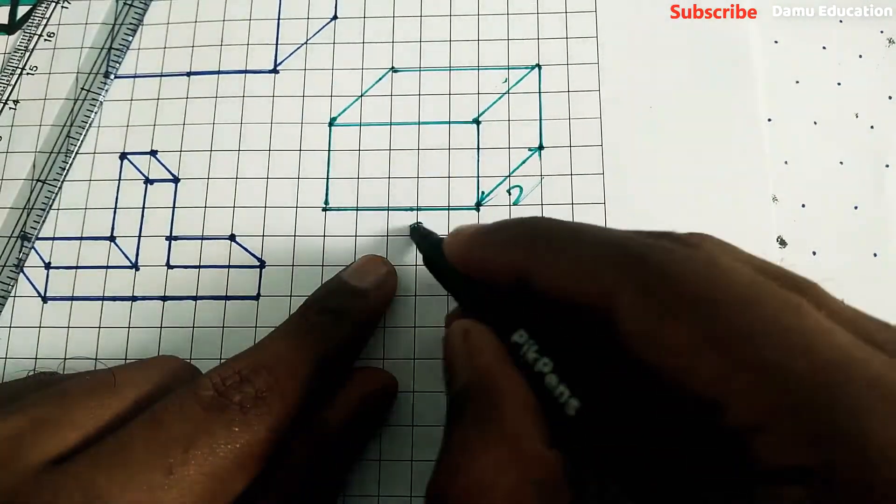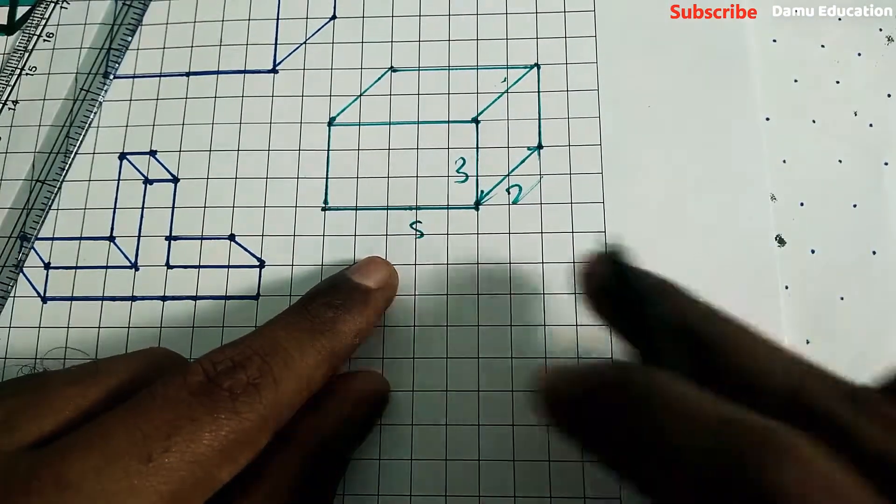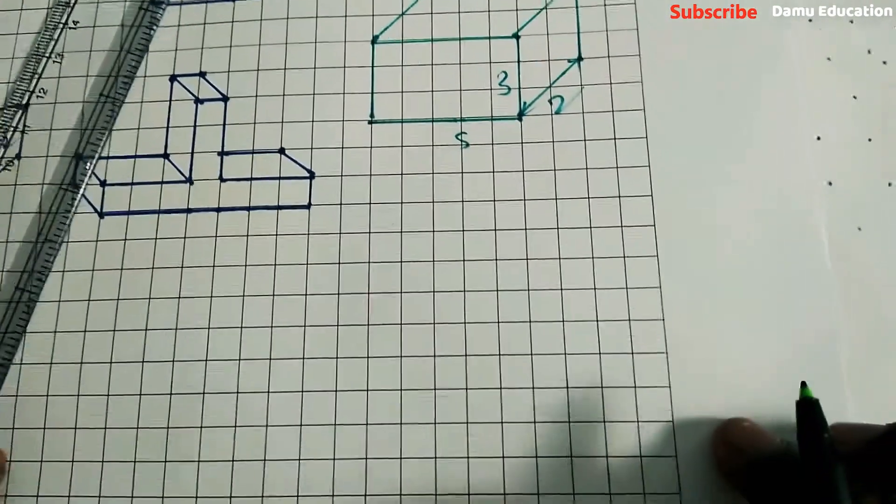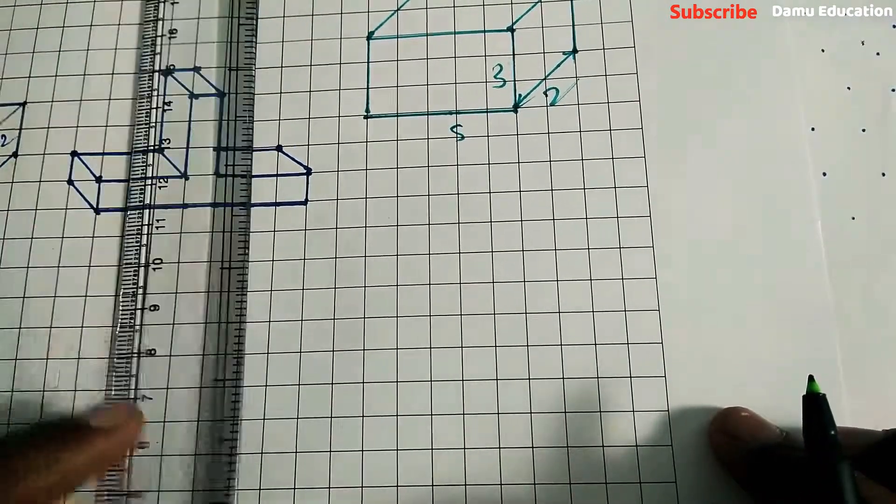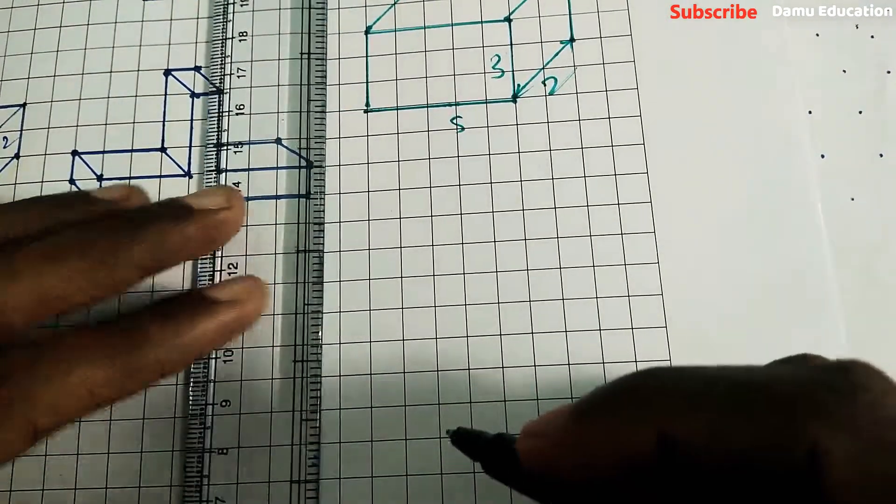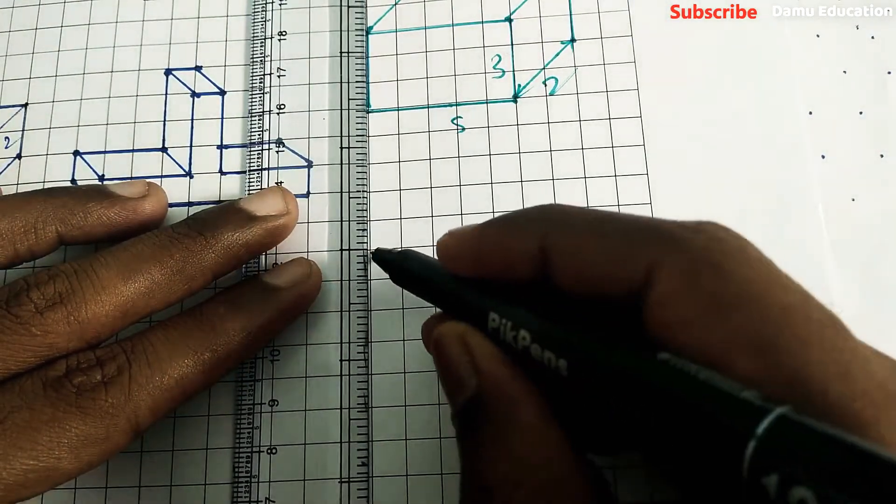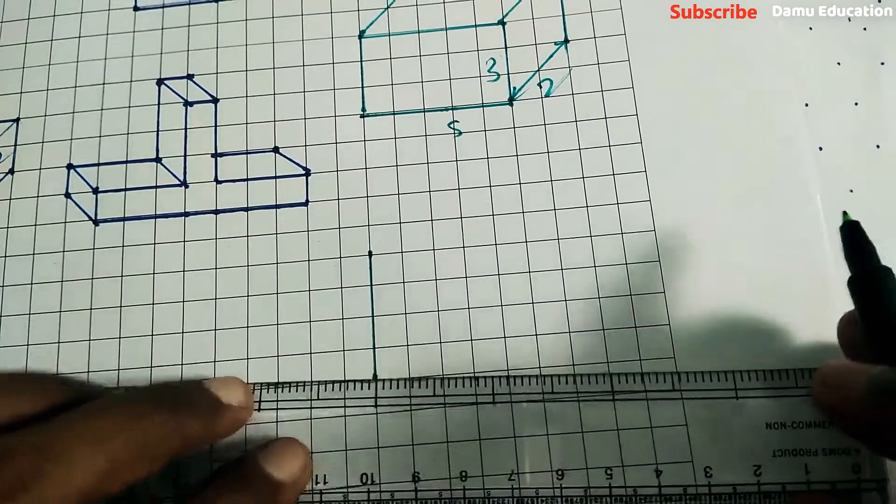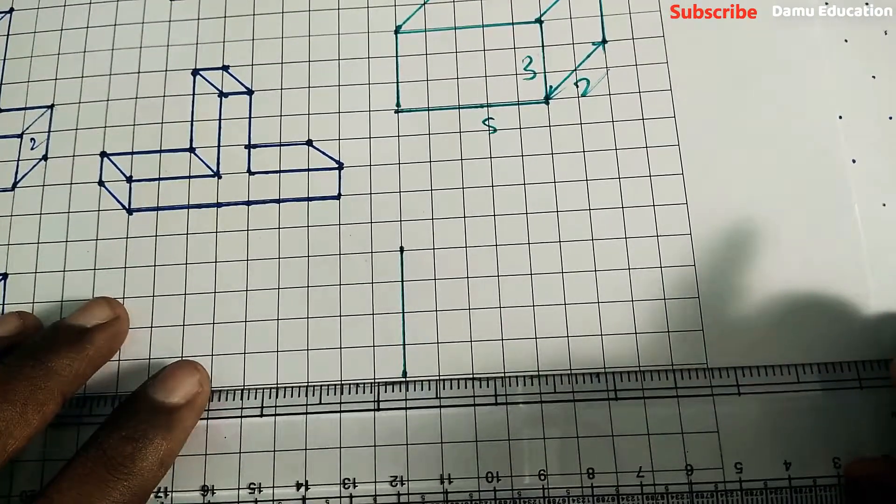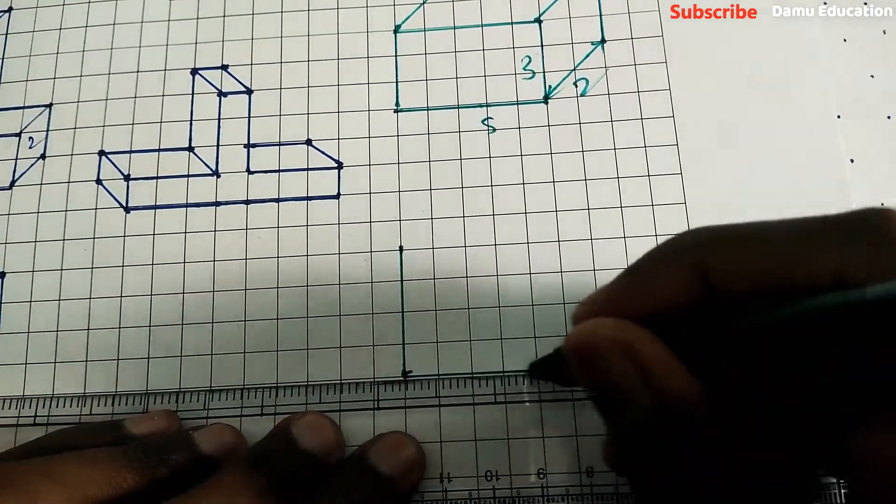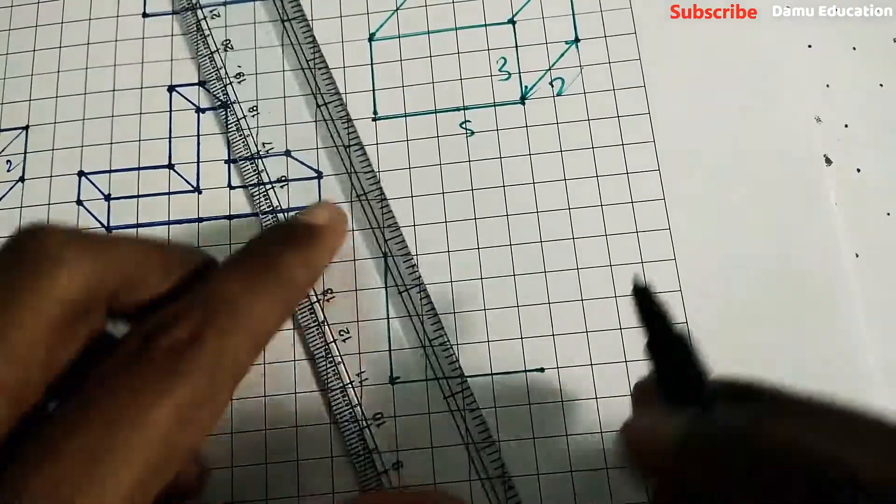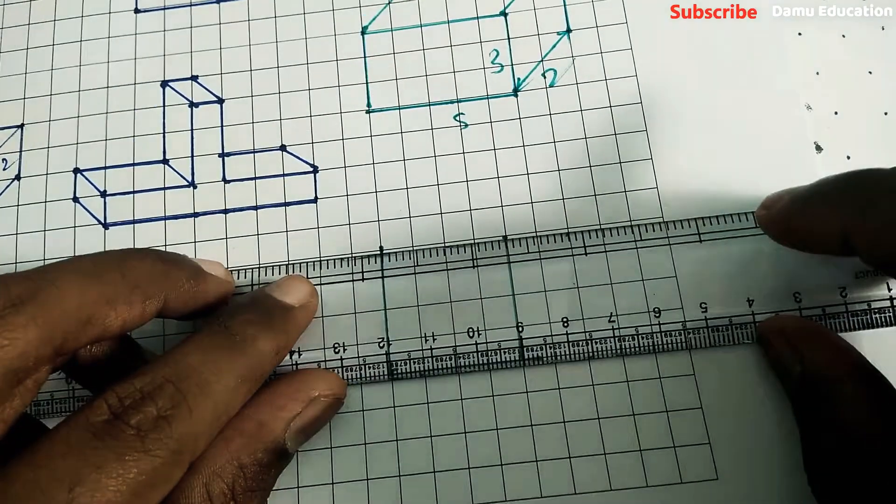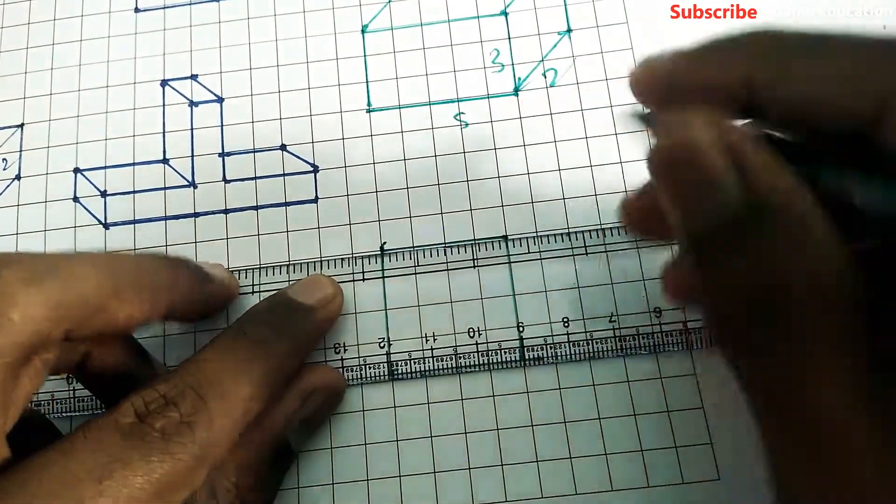For part B, one is a cube with 4 centimeter edge. So here let's take 4 centimeters: 1, 2, 3, 4. And it will be 4, 4 centimeters, 4 centimeters, just 4 centimeters. Then here also 4 centimeters.